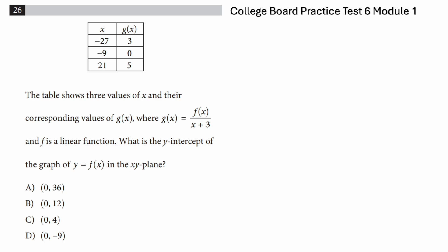The table shows three values of x and their corresponding values of g(x), where g(x) equals f(x) divided by (x + 3), and f is a linear function. What is the y-intercept of the graph of y = f(x) in the xy-plane?